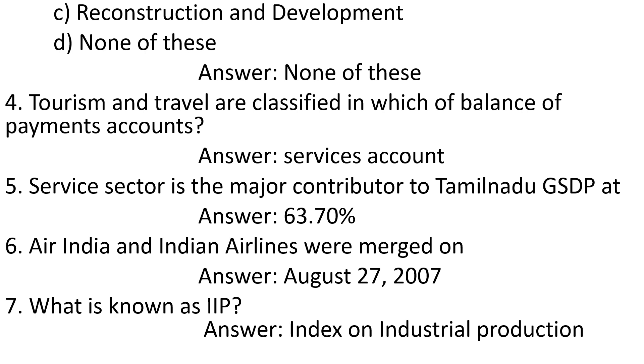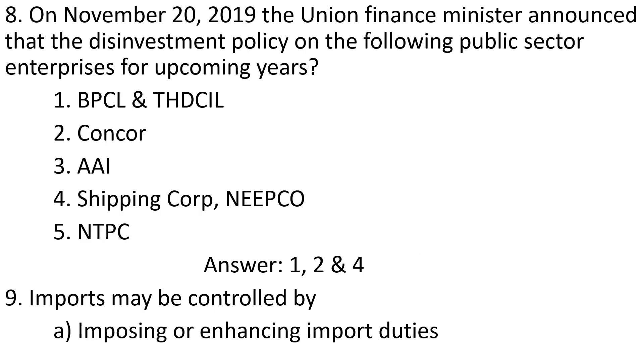Question 6: Air India and Indian Airlines were merged on. Answer: August 27, 2007. Question 7: What is known as IIT? Answer: Index on industrial production.